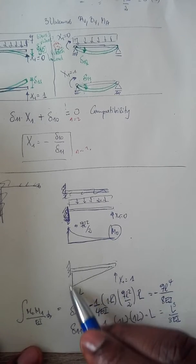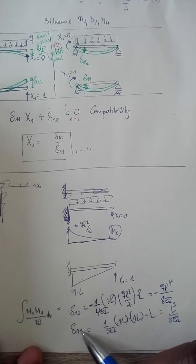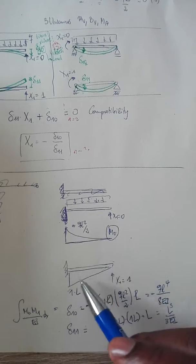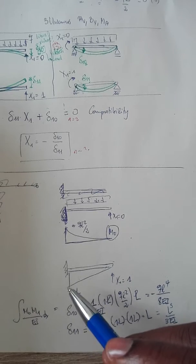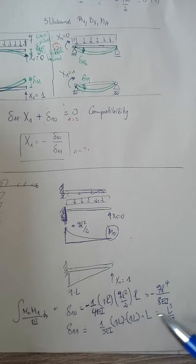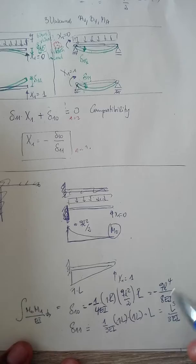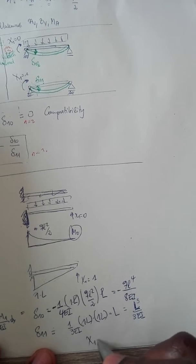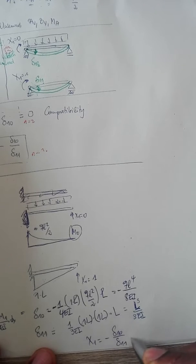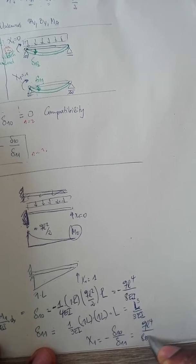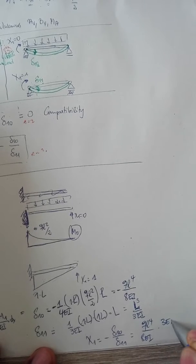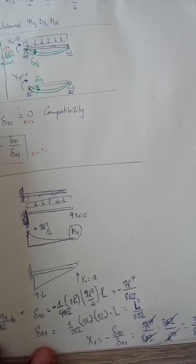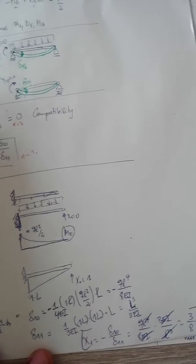Delta_11 is always positive because you're coupling a system with itself, so both moments are always on the same side. And x1 is nothing other than minus delta_10 divided by delta_11. That gives us: qL⁴/(8EI) times 3EI/L³ — L³ cancels, EI cancels — and we get x1 equals 3/8 qL.